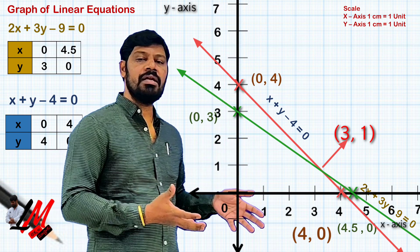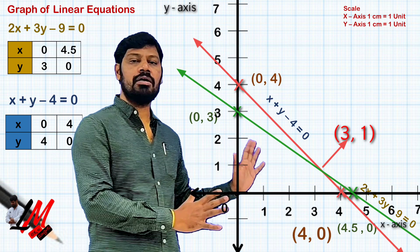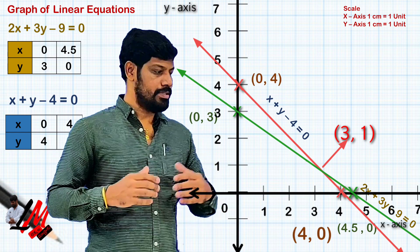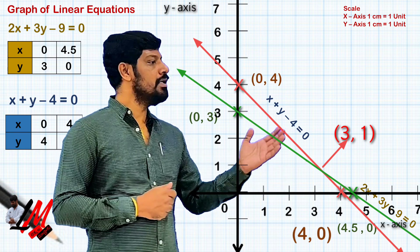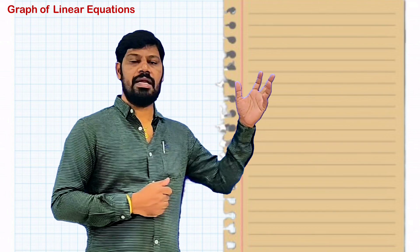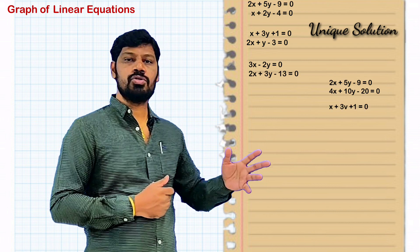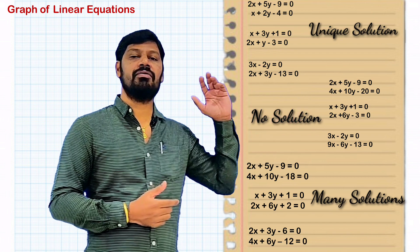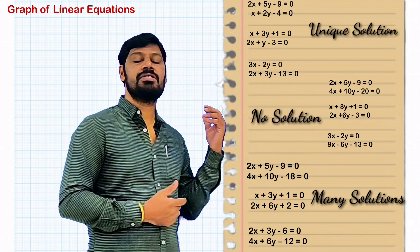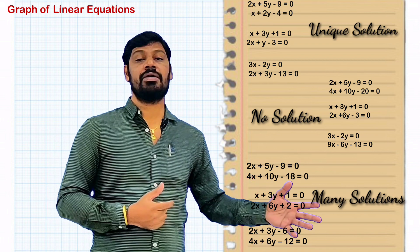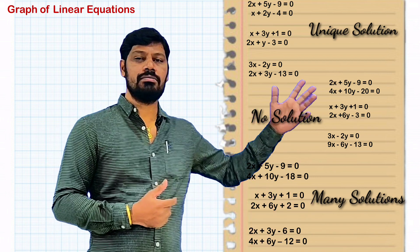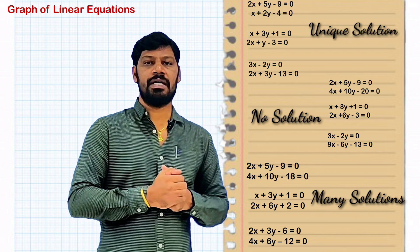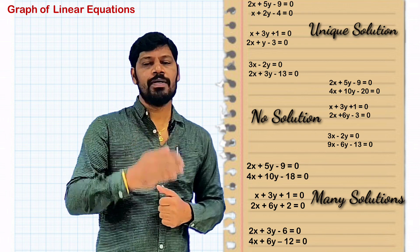So we have the complete graph and the solution x = 3, y = 1. This is one of the most important topics for board exams. I am providing nine practice problems — three for unique solution, three for no solution, and three for many solutions — covering intersecting, parallel, and coincidental lines. Keep practicing all nine problems. We'll meet in the next video with another topic. Take care, bye!